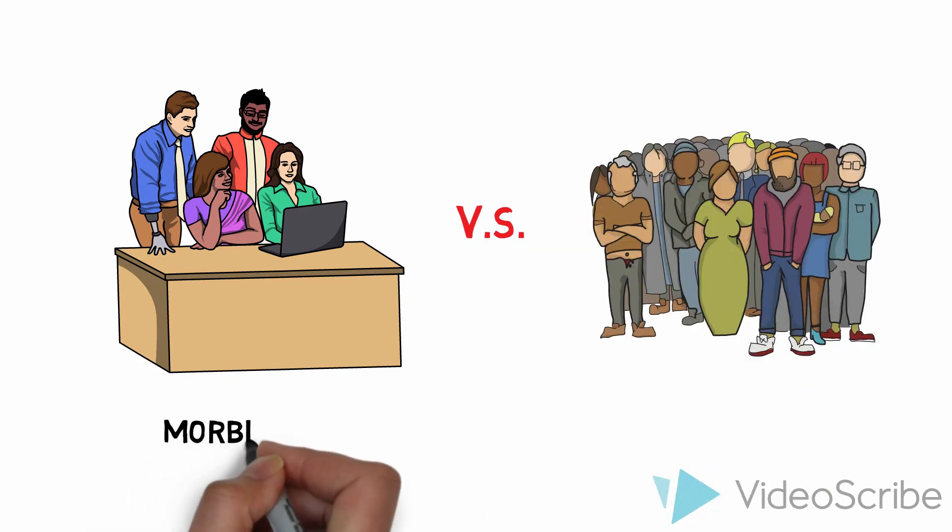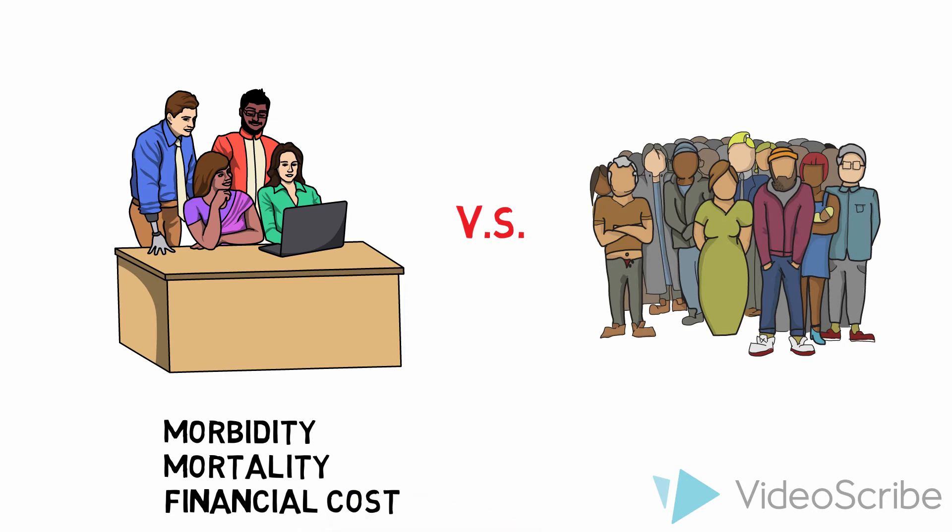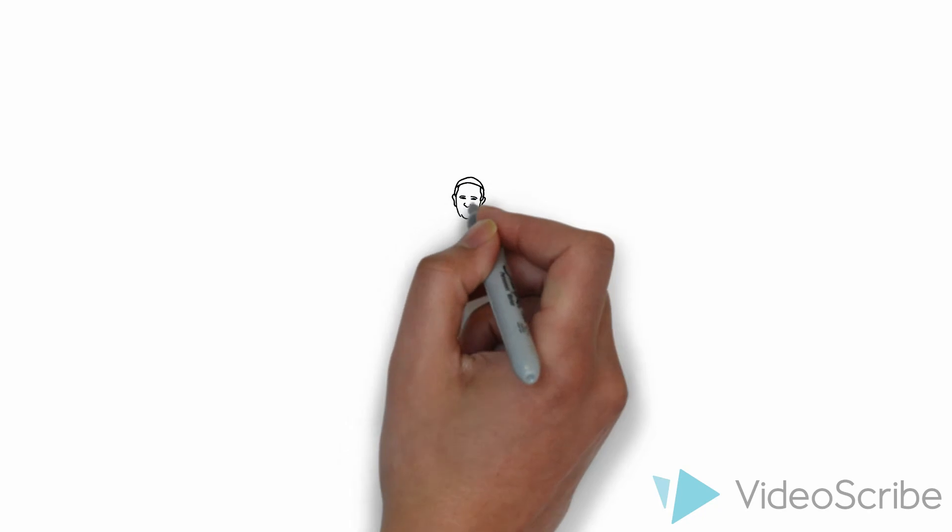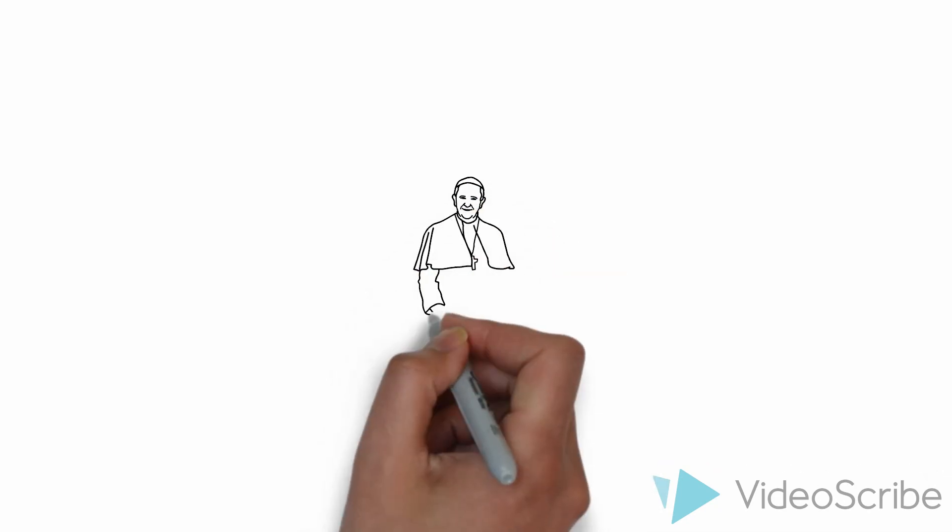For example, when many governments decide not to test patients who have mild symptoms, they might be afraid of the financial costs of exposing a great deal of cases and provoking public rage and fear. While some individuals decide to wear masks at an early stage, others might not think those are necessary due to cultural and cognitive differences.